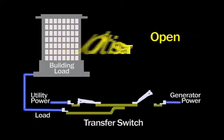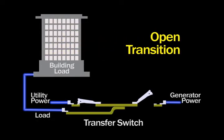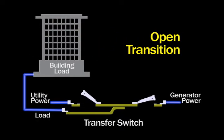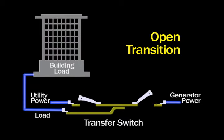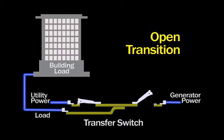The automatic transfer switch must safely make the transition of power from one source to the other. Open transition mode isolates one power source before connecting to the alternate source. This is also referred to as brake before make switching.